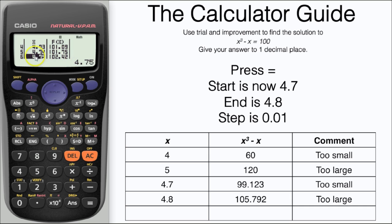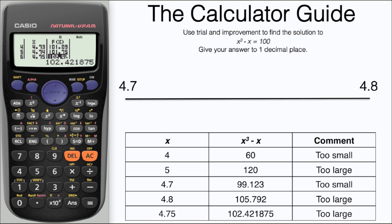So in this case 4.75, and I can use the navigation button to go to the right hand column and get my full calculator display. Now this is going to be too large as we were after a figure of 100. The reason why 4.75 is a good value is because it's halfway between our two critical values of 4.7 and 4.8.